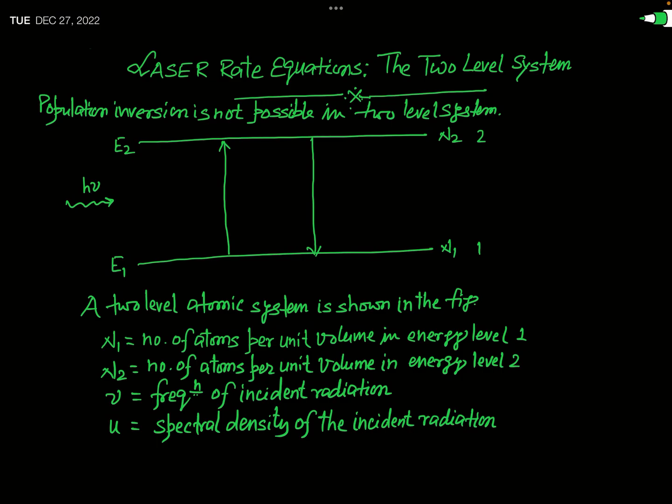This is a very important fact, and if you look at previous year question papers of public service commissions like UPSC, you will find such questions have been asked many times. Now let us consider an atomic system consisting of two levels, marked as level one and two. In energy level E1 the number of atoms per unit volume is N1, and in level 2 it is N2. We now incident electromagnetic radiation of frequency nu on this atomic system, with energy density equal to U.